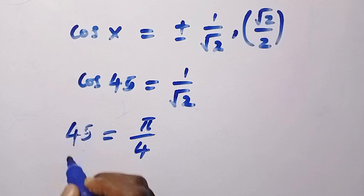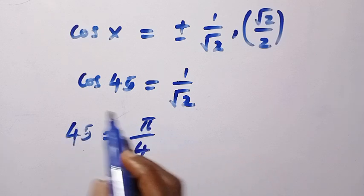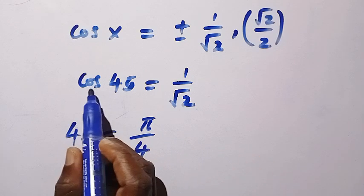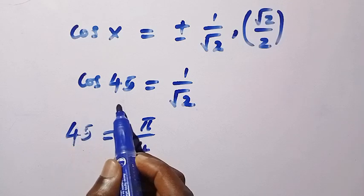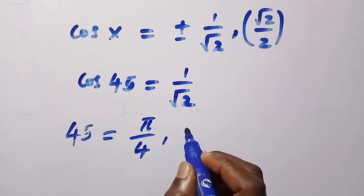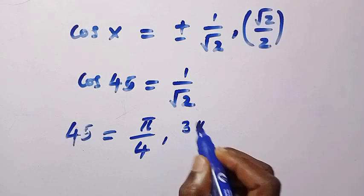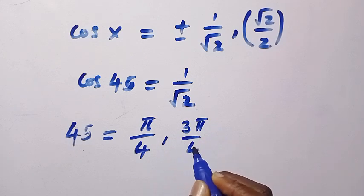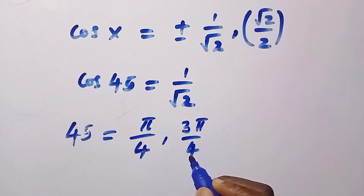So which means the next one that will come will also be, when we plug in the value here, cos of that number will also give us 1 divided by root 2. And what are those numbers? So the next one will be 3 pi divided by 4.